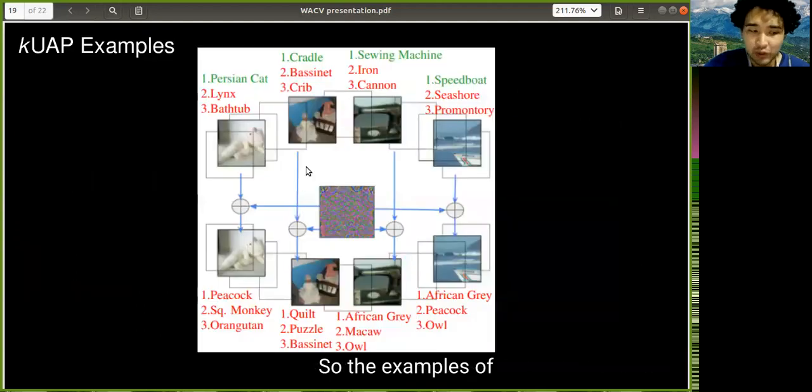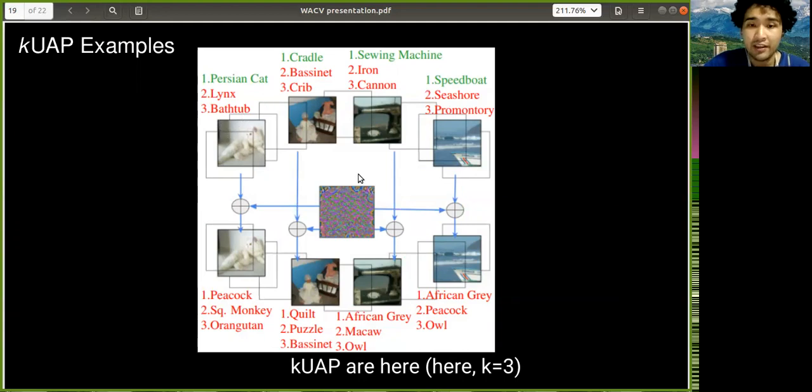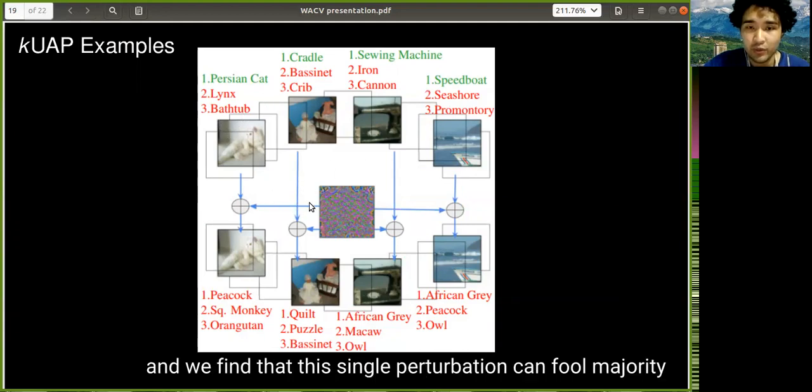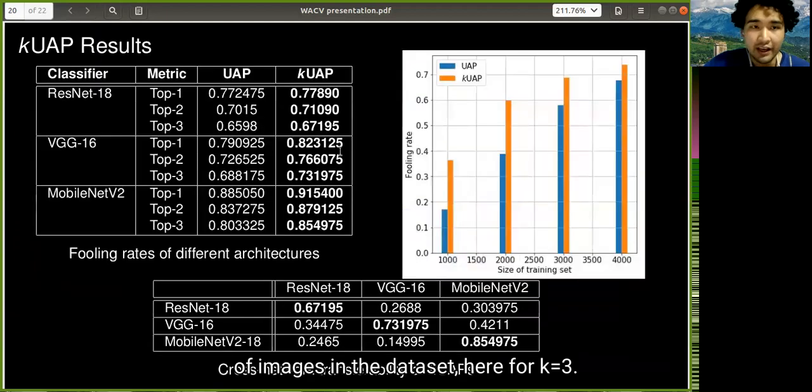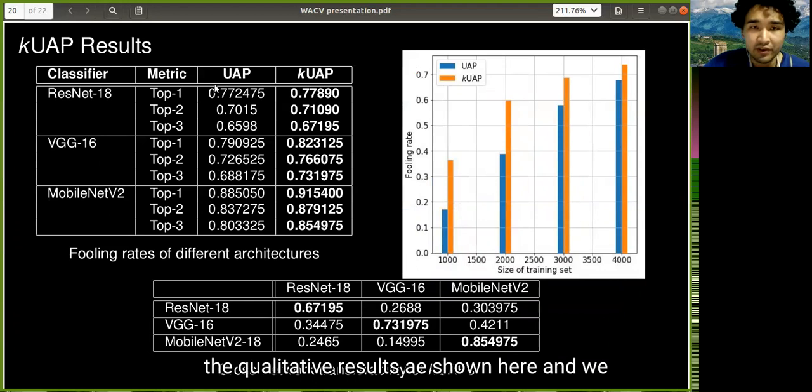So the examples of K-Fool and K-UAP are here. Here, k equals three, and we find that this single perturbation can fool the majority of images in the dataset. The qualitative results are shown here, and we found that K-UAP outperforms UAP.